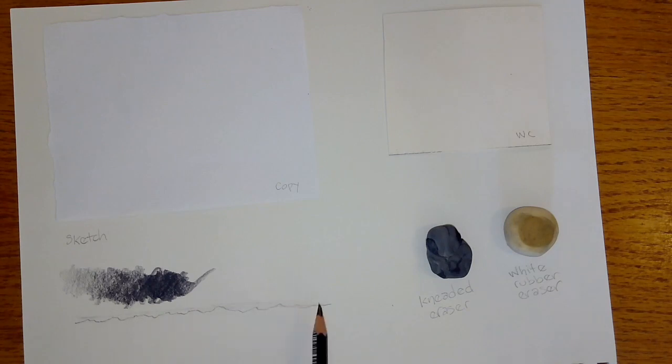The more pressure you apply, the deeper that graphite can settle into the paper surface. Depending on how textured your paper is, applying more pressure to get to that darker value is actually pressing the graphite right into the valleys.